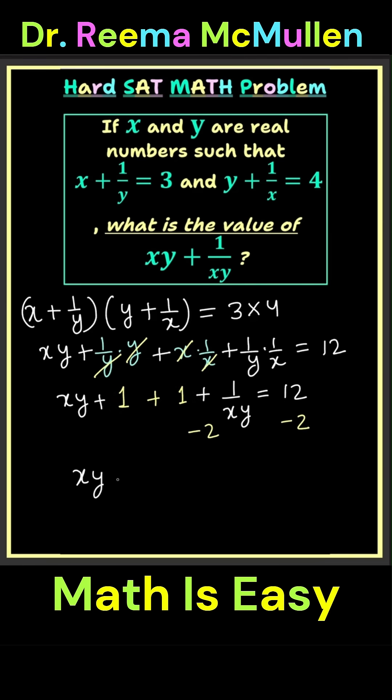That gives us xy plus 1 over xy equals 12 minus 2, which is 10. So here's your answer: xy plus 1 over xy equals 10.